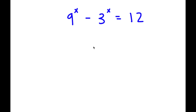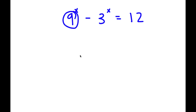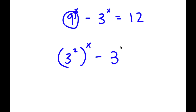In this problem, I have 9 to the power of x minus 3 to the power of x is equal to 12. To solve this, I'm going to first start by rewriting 9 as 3 squared. So now I have 3 squared to the power of x minus 3 to the power of x is equal to 12.